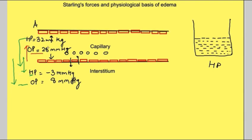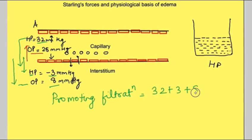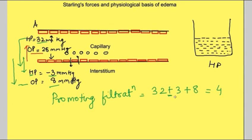By balancing the forces, we can determine which side water moves. Forces promoting filtration are: hydrostatic pressure in the capillary (32 mmHg), negative interstitial hydrostatic pressure (3 mmHg), and interstitial osmotic pressure (8 mmHg). Adding these: 32 + 3 + 8 = 43 mmHg total forces promoting filtration.